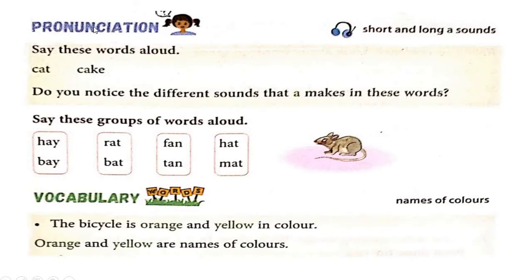See now — pronunciation, short and long A sound. What we have to do? We will learn pronunciation, the A sound which can be short and long. Say these words aloud. Cat — C-A-T, cat. And cake — C-A-K-E, cake. Do you notice the different sounds that the letter A makes in these words?